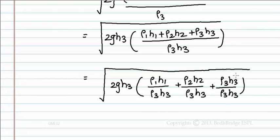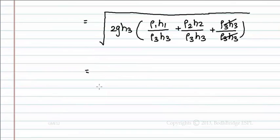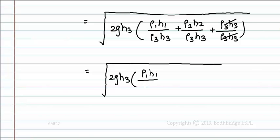Here rho3 h3 and rho3 h3 will get cancelled. So finally the equation becomes root of 2gh3 into rho1 h1 by rho3 h3 plus rho2 h2 by rho3 h3 plus 1.